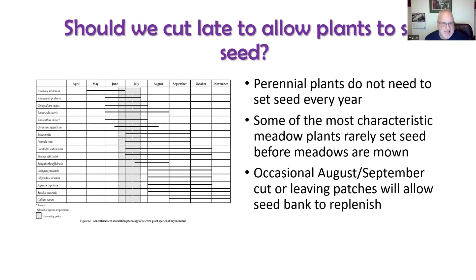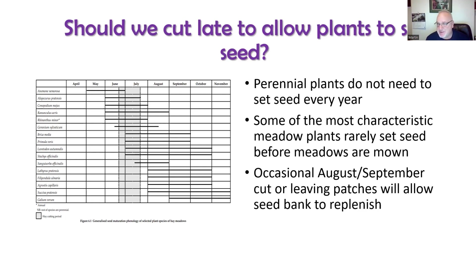Looking at a chart of flowering and seed-set times, the grey column in the middle represents the haymaking period. Many characteristic grassland plants don't set seed before haymaking and yet can be abundant in hay meadows. For instance, Filipendula ulmaria — meadowsweet — can be the dominant plant in wetter meadow types but almost never sets seed before the hay is cut. Likewise, great burnet — there's a whole type of grassland named after it — very rarely sets seed before the hay is harvested.